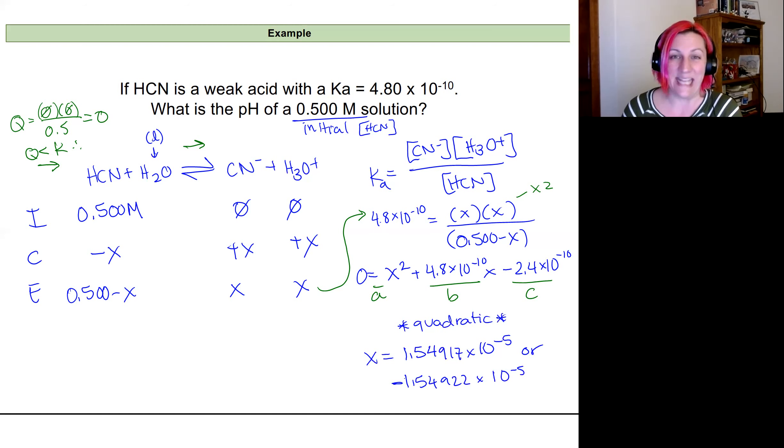And so only one of these makes sense. A negative value for X would be a negative concentration. And so that automatically means that the one that's reasonable is that first one that is positive. So that's going to be my X value. So next I'm going to plug this back in.